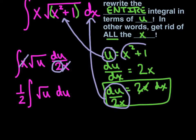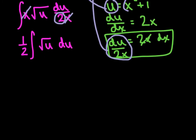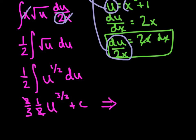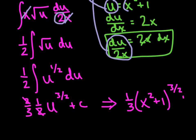Now we're going to carry out the power rule. Rewriting the integral with a fractional exponent, the power rule says add 1 to the exponent and divide by that new power. Dividing by three-halves is the same as multiplying by two-thirds. So we had one-half, multiplied by two-thirds, which simplifies to one-third. Then we resubstitute back in terms of x, giving us one-third times the quantity x squared plus 1 raised to the three-halves power, plus C.